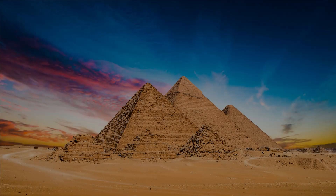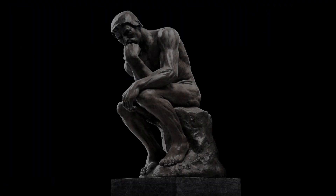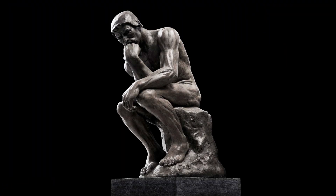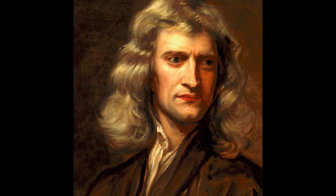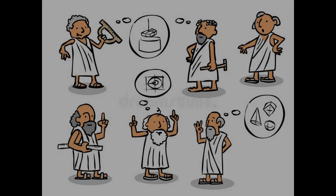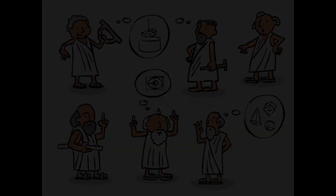The earliest roots of science can be traced to ancient Egypt and Mesopotamia in and around 3000 to 1200 BCE. Science started out as a philosophy, and the first scientists such as Newton didn't even see themselves as scientists, but rather as philosophers who were trying to understand the natural world around them.